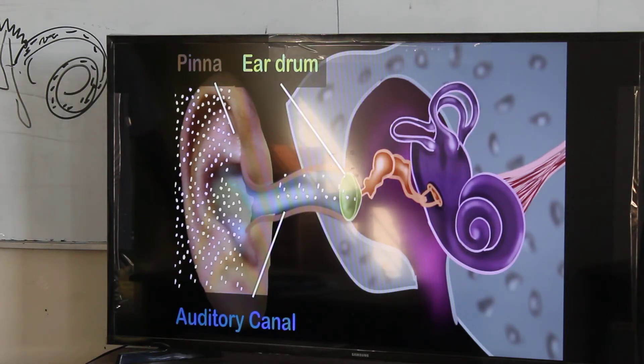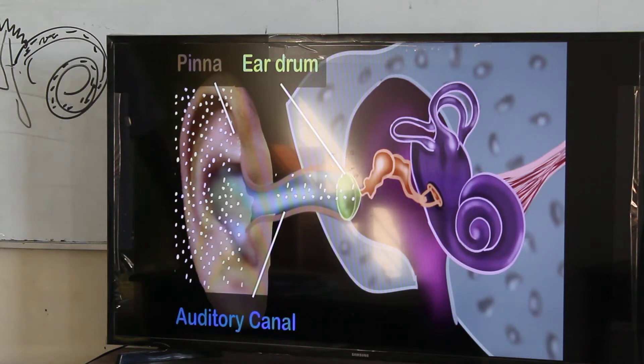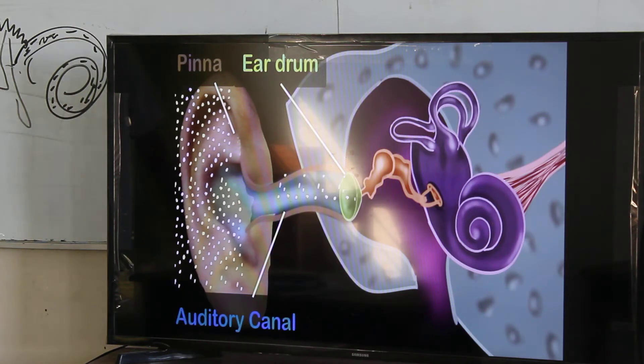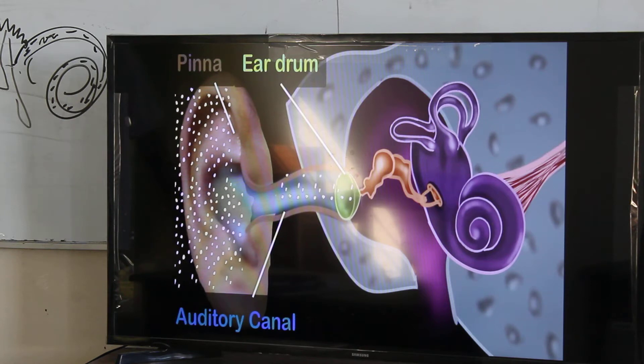The ear drum is a transparent membrane which is super sensitive to the vibrations of the air. So as the air vibrates, even the ear drum starts vibrating, just like the skin of the drum. And as you can see, the ear drum also separates the outer ear from the middle ear.